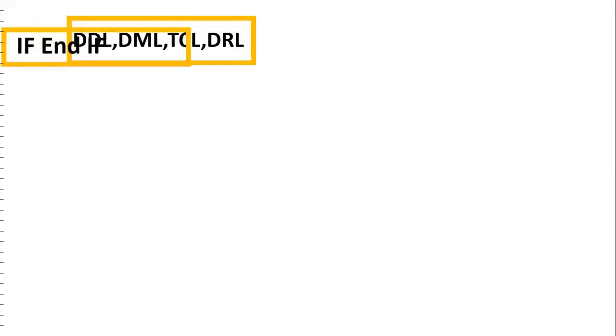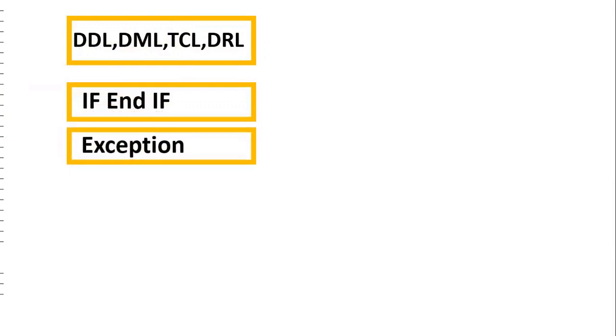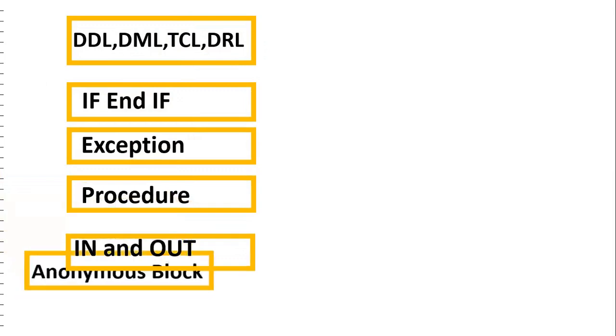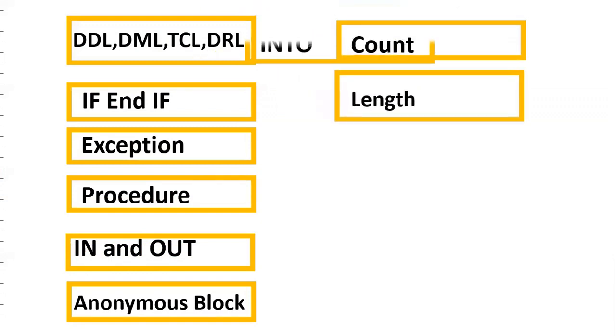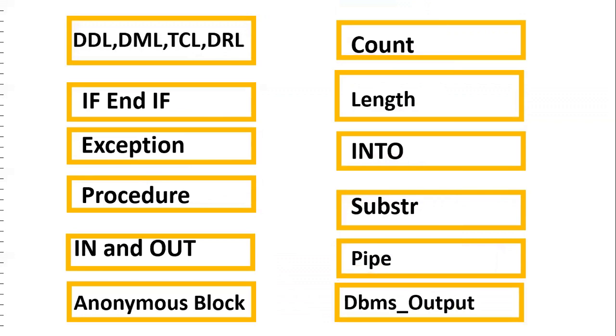To solve this requirement, you should understand the following concepts: DDL (Data Definition Language) — the CREATE statement; DML (Data Manipulation Language) — INSERT and UPDATE; TCL (Transaction Control Language) — COMMIT; and DRL — the SELECT statement. You should also know exception handling for runtime errors, procedures, IN and OUT parameters, anonymous blocks, COUNT as an aggregate function, LENGTH to find the length of the PIN, INTO clause, SUBSTR to extract part of a string, the pipe symbol to concatenate strings, and DBMS_OUTPUT to see results on the console.